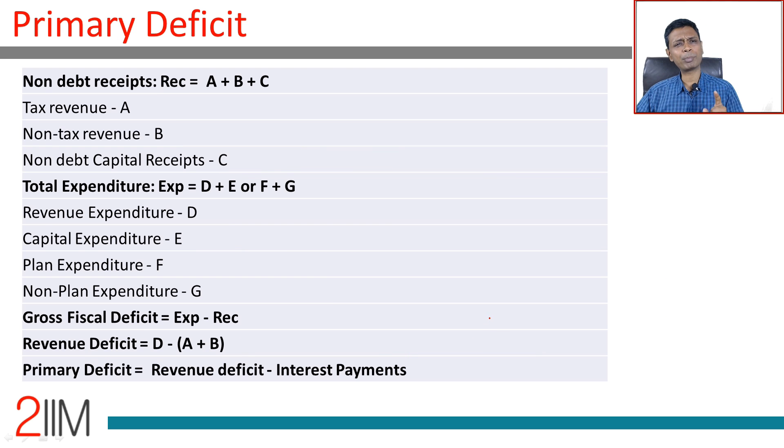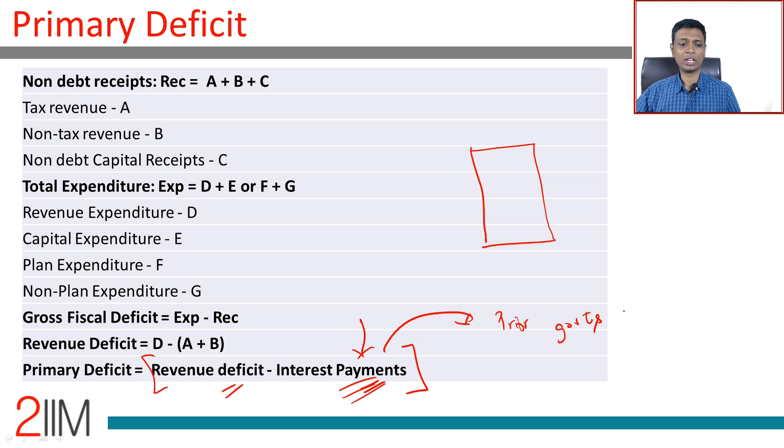Beyond this, there is something called primary deficit, which is revenue deficit minus interest payment. Your father's father has borrowed a lot of money, and you are servicing interest payments on these. But this is not on account of your ill management or your lavish lifestyle. This is what you have inherited. In national account terms, this is what you are saddled with because of the past sins of prior governments. We will remove that also and then see if you are running a deficit. If you run a primary deficit, you are well and truly in trouble.